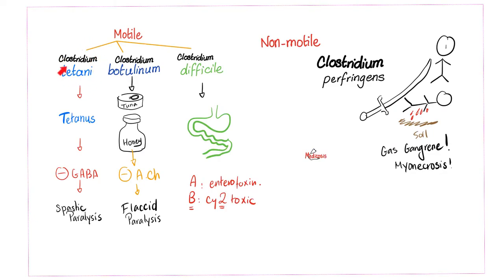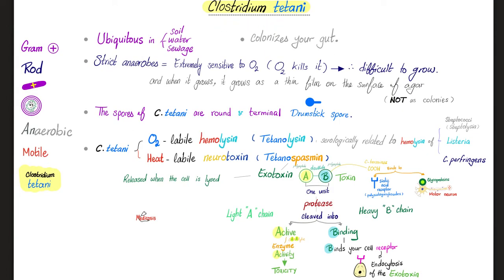Clostridium tetani produces two types of toxins, the most famous of which is tetanospasmin. It is abundant and ubiquitous in soil, water, and sewage, and colonizes your gut. It is strictly anaerobic and extremely sensitive to oxygen — oxygen will kill Clostridium tetani, making it very difficult to culture. If your sample is exposed to even a tiny amount of oxygen, it is ruined and won't grow.